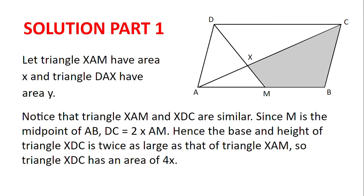Solution. Let triangle XAM have area X and triangle DAX have area Y. Notice that triangle XAM and XDC are similar. Now since M is the midpoint of AB, DC equals 2 multiplied by AM.